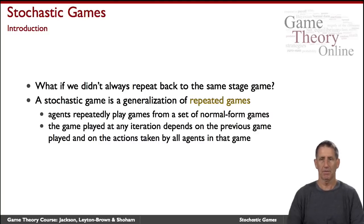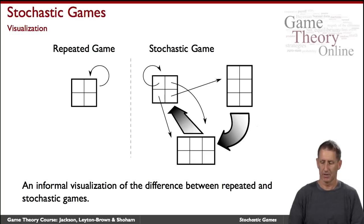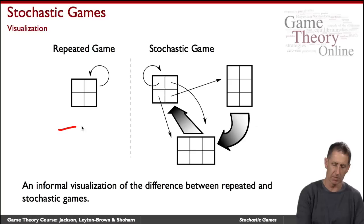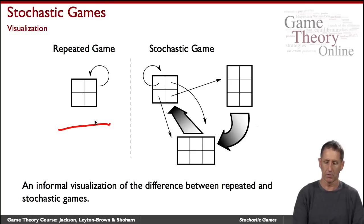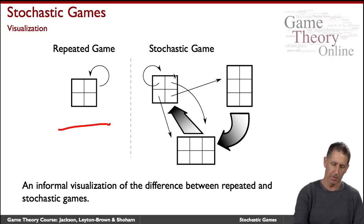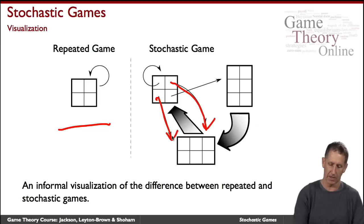A graphical way to look at it is as follows. In a repeated game, you play the same game over and over again. In a stochastic game, you play a game, and depending on what actions were taken, you might transition to a different game, or possibly back to the same game.